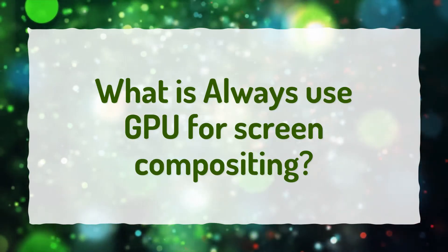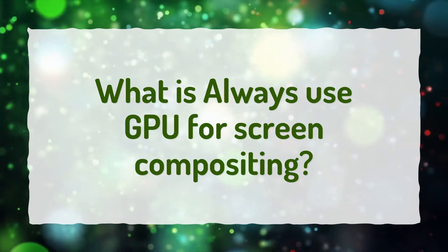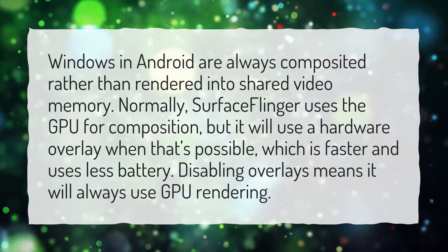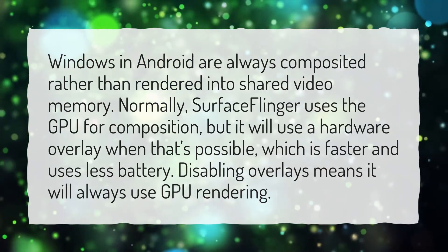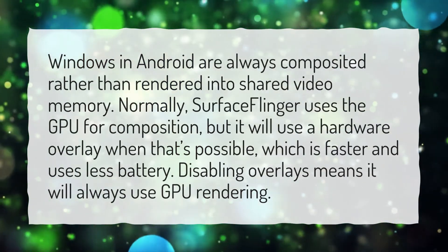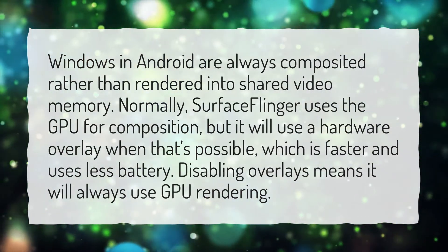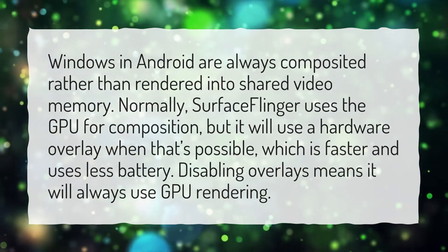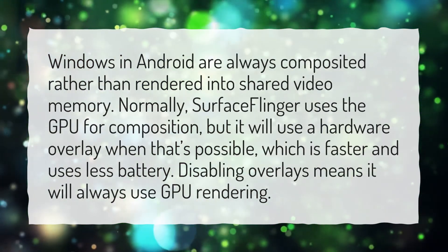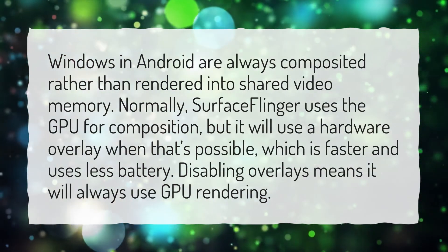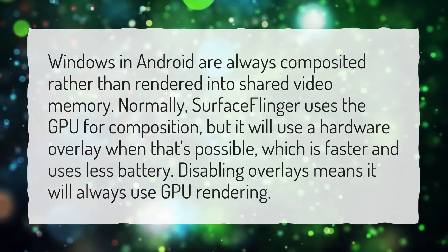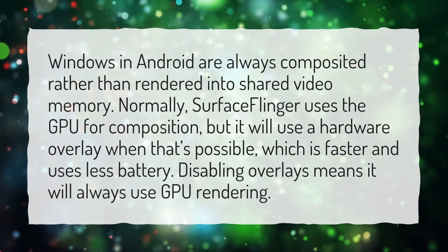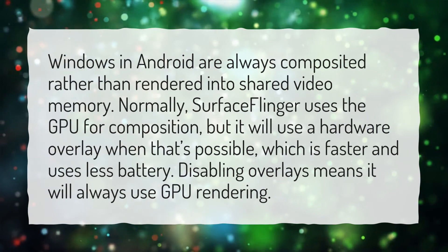What is Always Use GPU For Screen Compositing? Windows and Android are always composited rather than rendered into shared video memory. Normally, Surface Flinger uses the GPU for composition, but it will use a hardware overlay when that's possible, which is faster and uses less battery. Disabling overlays means it will always use GPU rendering.